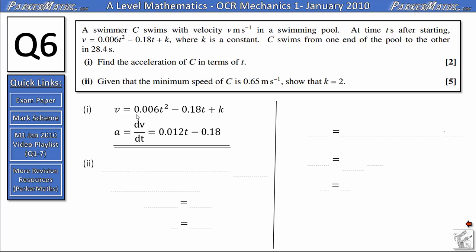Hopefully from core one, you should know that to find the minimum point of a curve, you differentiate it and then you set that equal to 0. So we're trying to solve when dv dt equals 0.